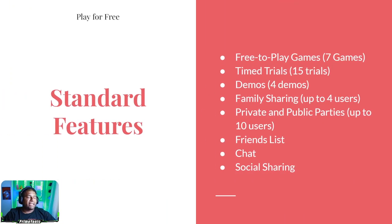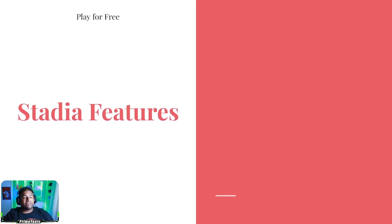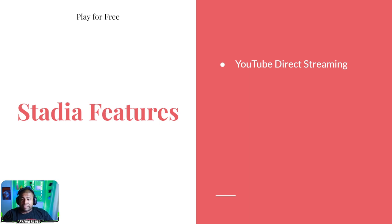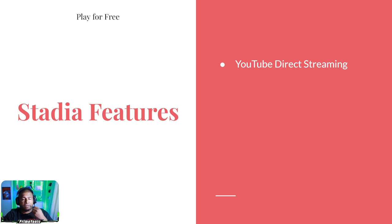Now let's talk about Stadia-specific features — features that most other consoles don't have. First is YouTube direct streaming. If you want to be a streamer, you can literally grab your phone, launch a game, and start streaming. You can do it from your desktop or your TV — YouTube is Google, and you need a Gmail account for both. Just link your Stadia account to your YouTube account and you can start streaming immediately — no extra software, no camera required.